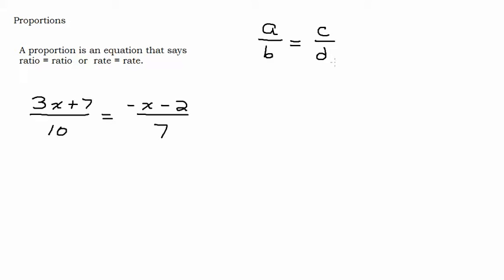So when we have something like this and we want to solve it, we're going to use something called the cross product property. So to show what that looks like, I'm going to take and I'm going to multiply both sides of this equation by b times d.